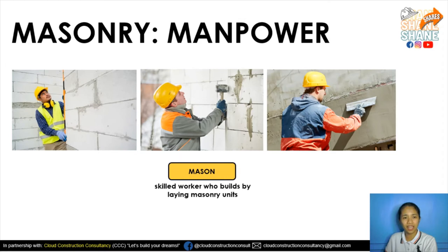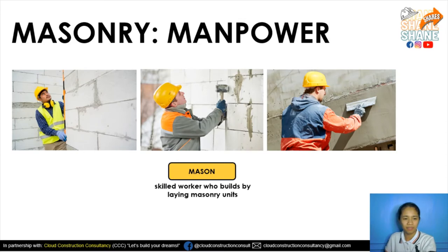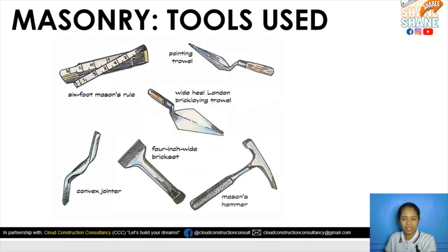The mason's hammer is used for alignment. As you can see here, we have the self-leveling rod, then the hammer, and then the brick set used for flattening during plastering.